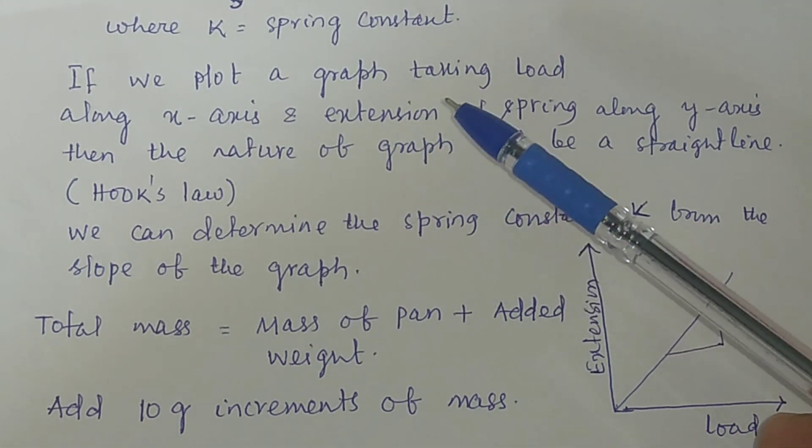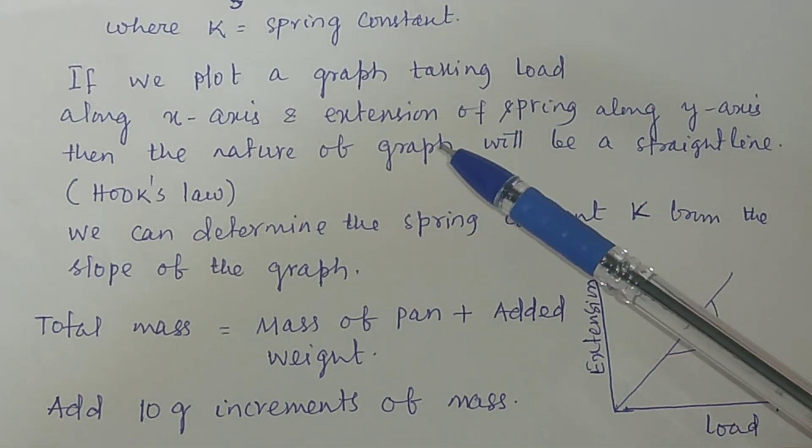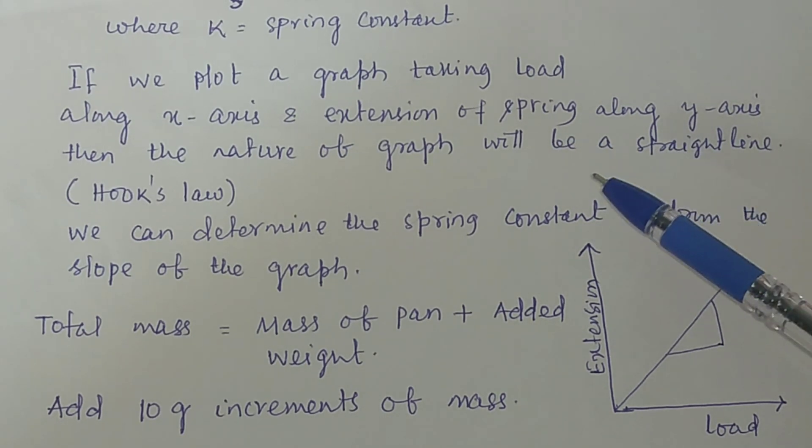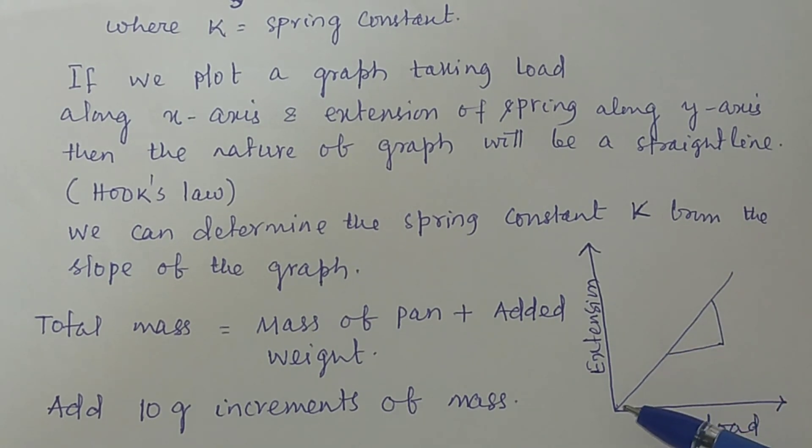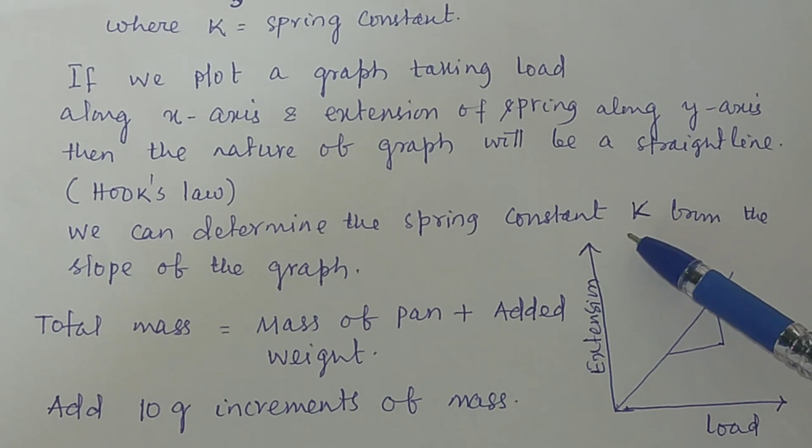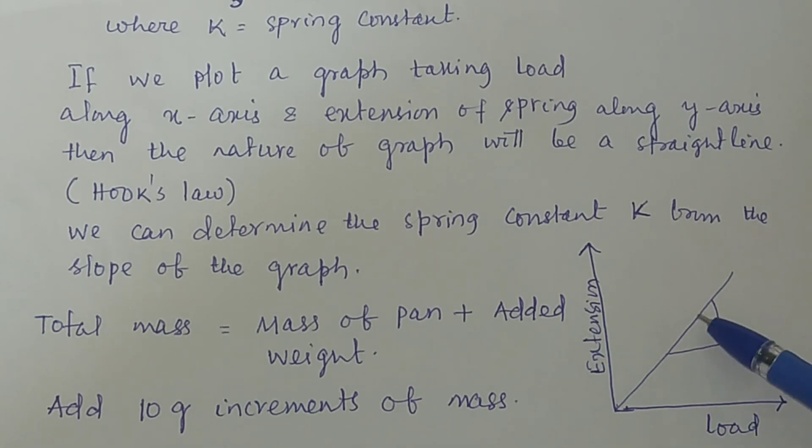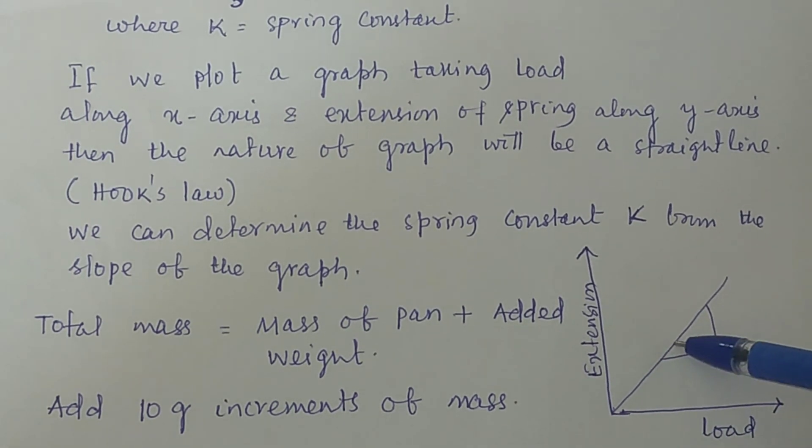If we plot a graph taking load along x-axis and extension of the spring along y-axis, then the nature of the graph will be a straight line. We can determine the spring constant k from the slope of this graph by dividing this length with this length to find the slope or tan theta.